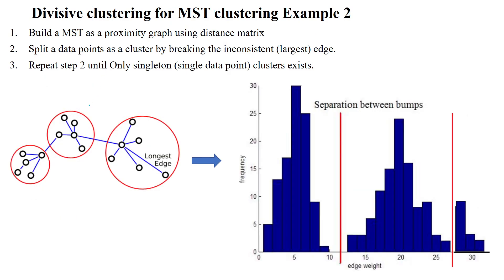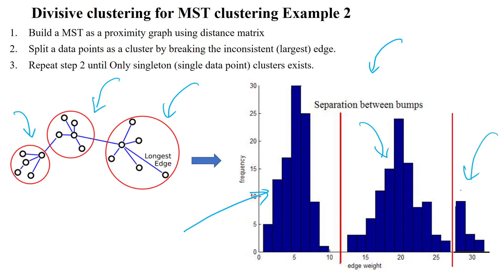So this is the purpose of divisive clustering in minimum spanning tree. The minimum spanning tree can also be visualized using histograms. Here you can see that this group of data points is available in this cluster, this group is in this histogram, and this cluster's data points are in this histogram — just for visualizing the clustering data points.